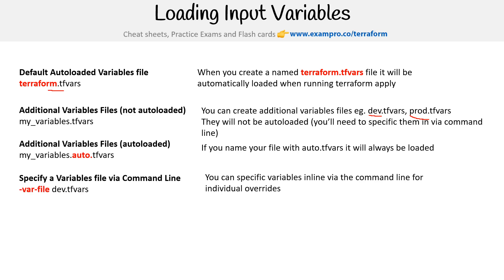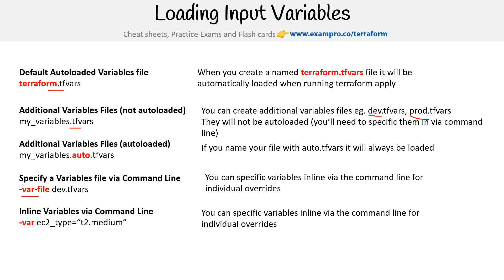Then you have the -var-file flag when doing terraform apply or plan — this is how you load additional variable files. If you need to override a single value, you can use -var. For example, you can override the instance type to be t2.medium.